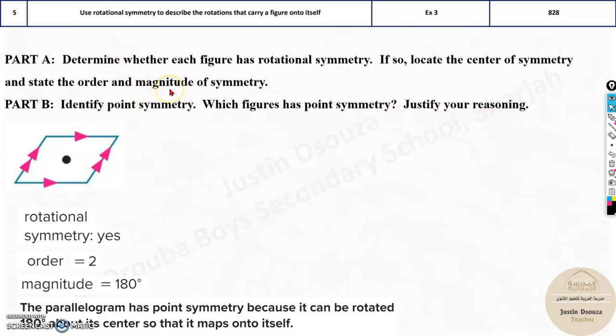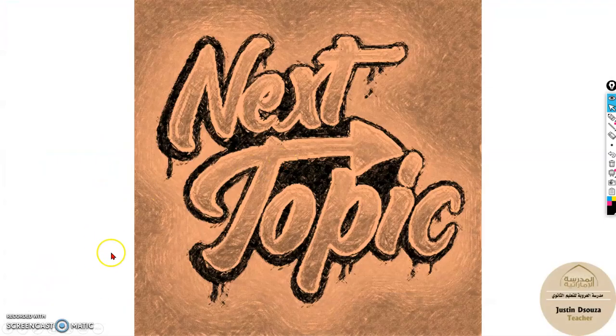Whereas rotational symmetry is you need to analyze that object. See whether you can map onto itself before 360 degrees and if so, how many times and then you can easily find it out. So that's the end of that topic. In the next section, we will learn other topics.